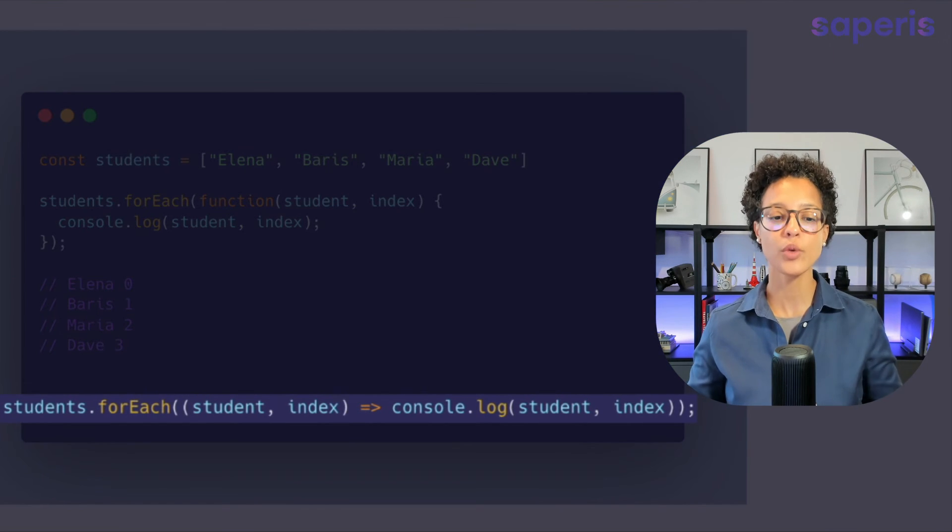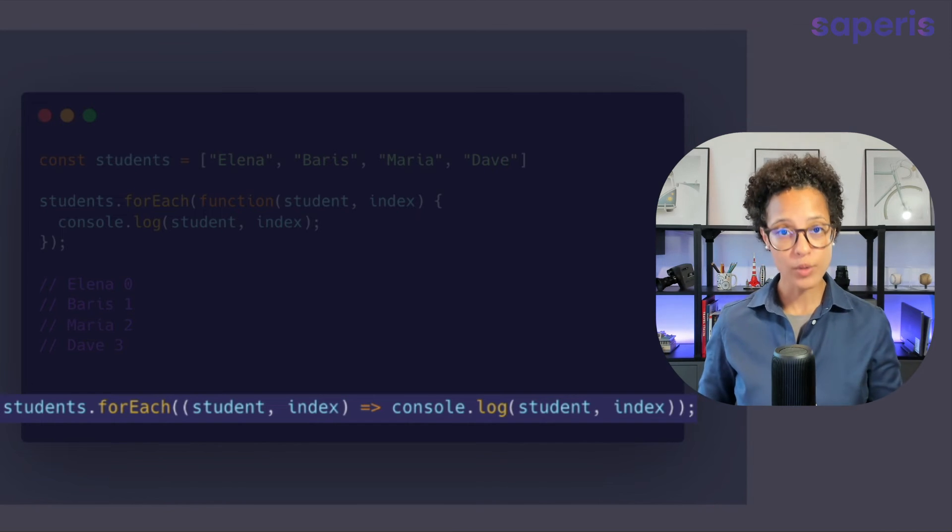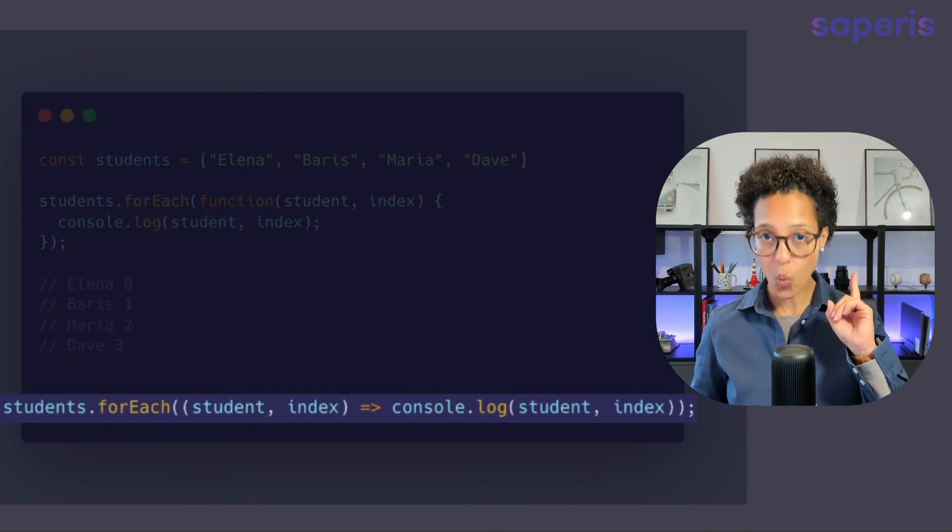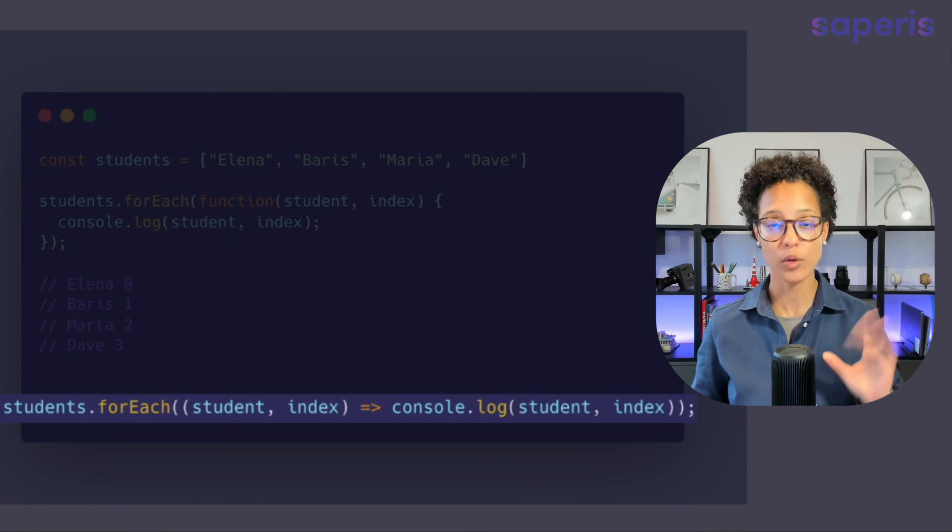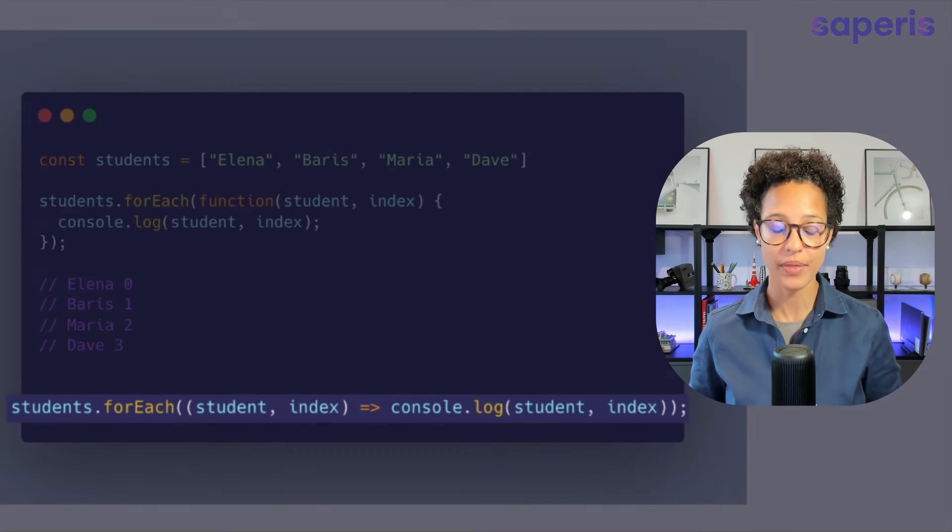And again the last line to show you is how you would write this with the arrow function and note that with arrow functions as soon as you have more than one parameter, so not only student but also index, this has to be enclosed with parentheses.